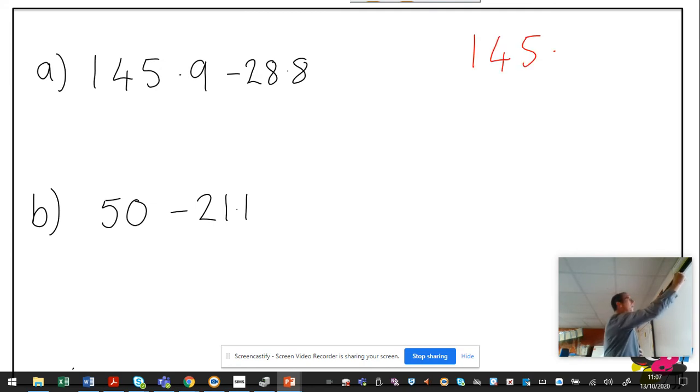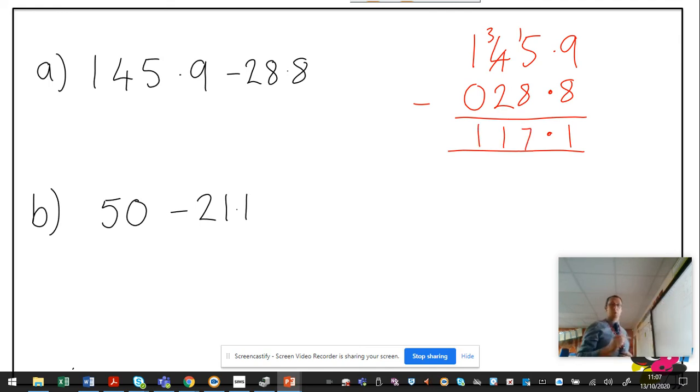So 145.9 take away 28.8. And there's no hundreds, so put the placeholder in. 0.8. Line up with decimal points. 9 take 8, 1. 5 take 8, exchange. 15 take 8, 7. 3 take 2, 1. 1 take 0, 1. 117.1.